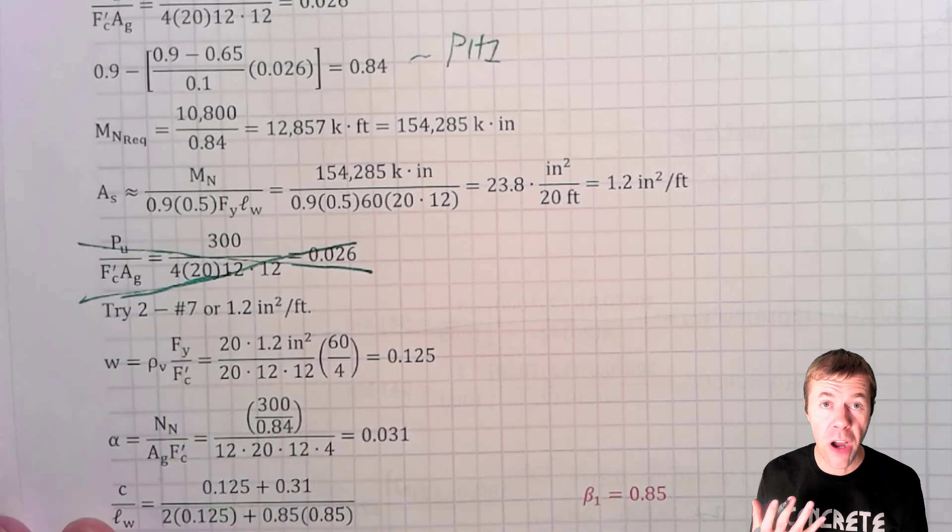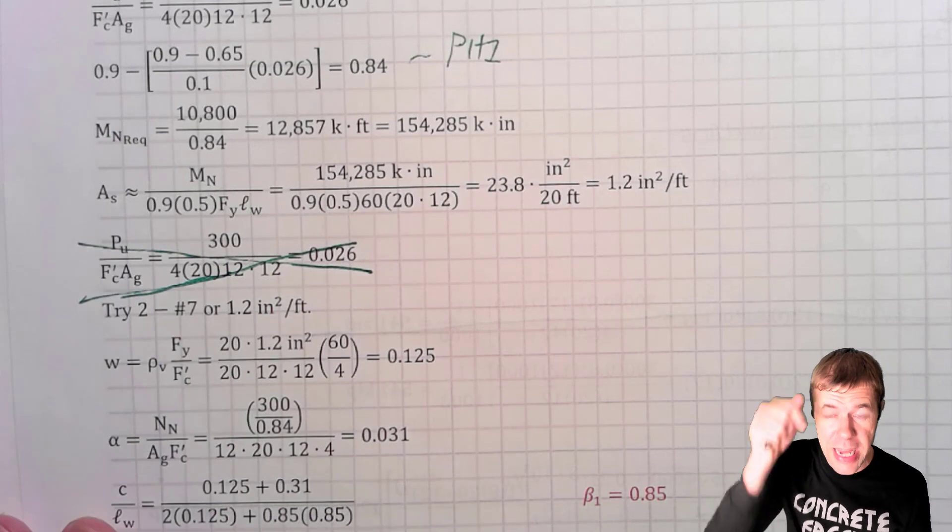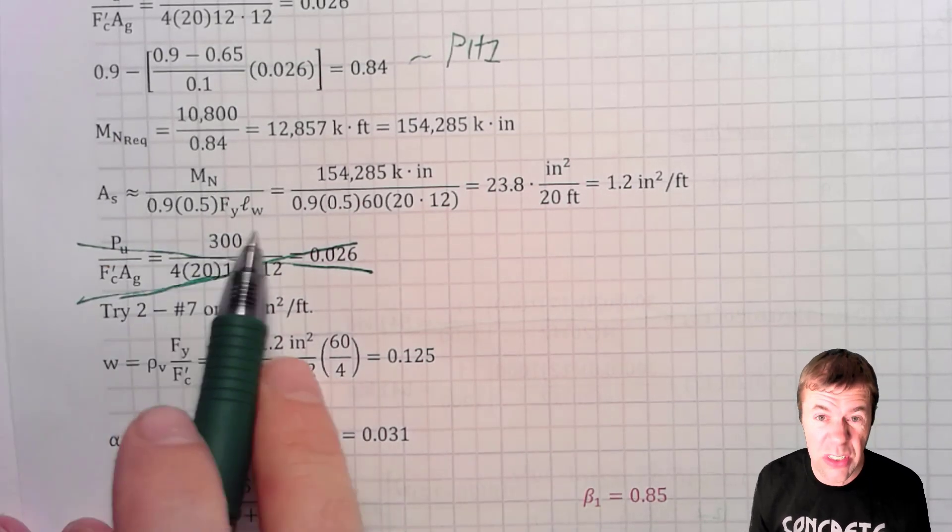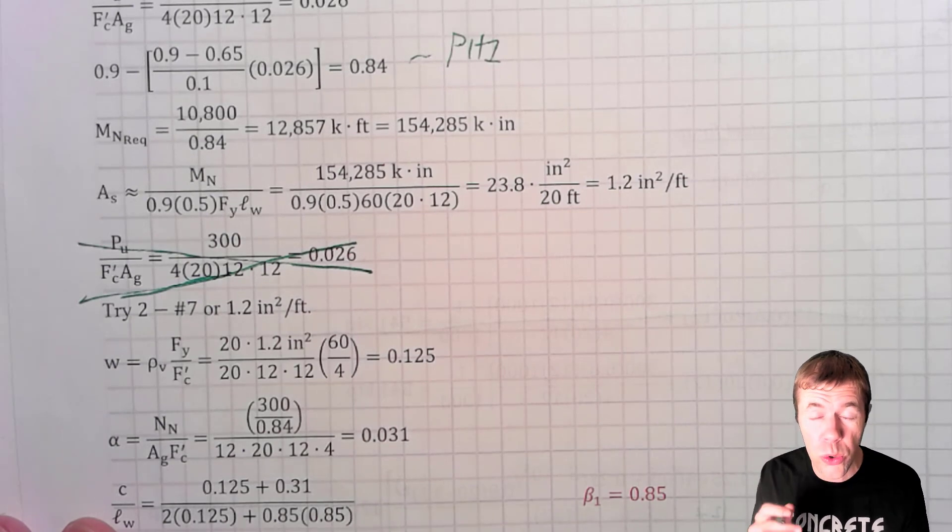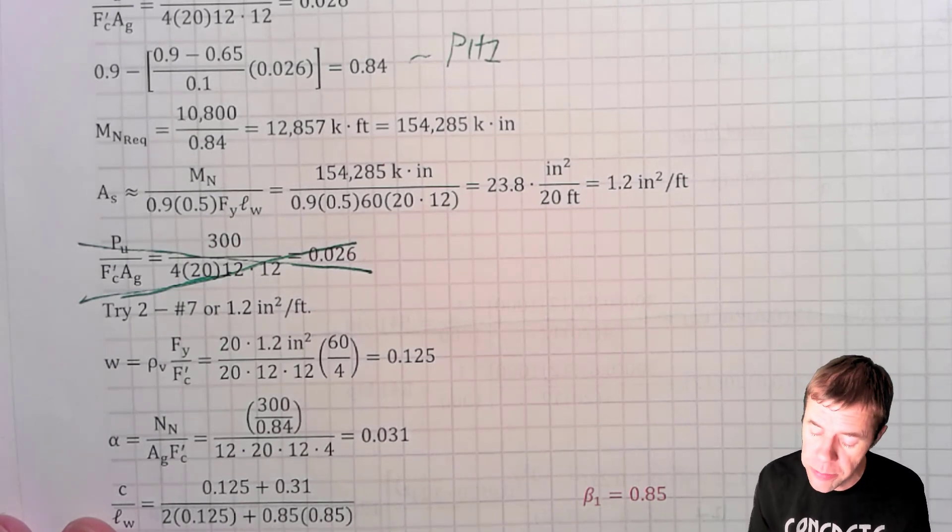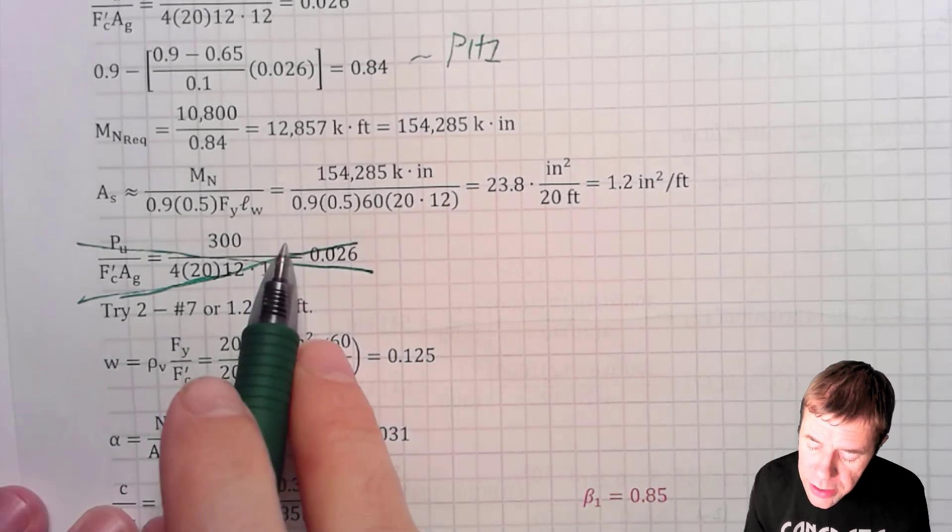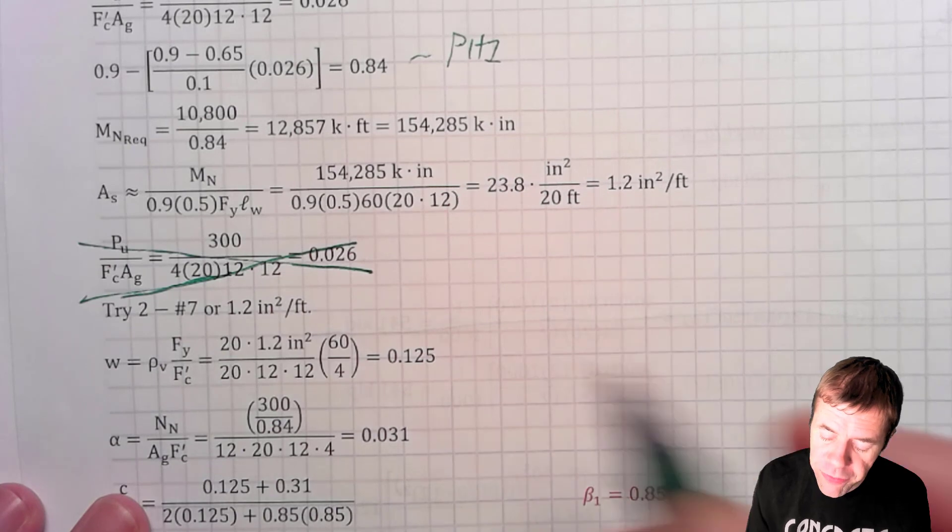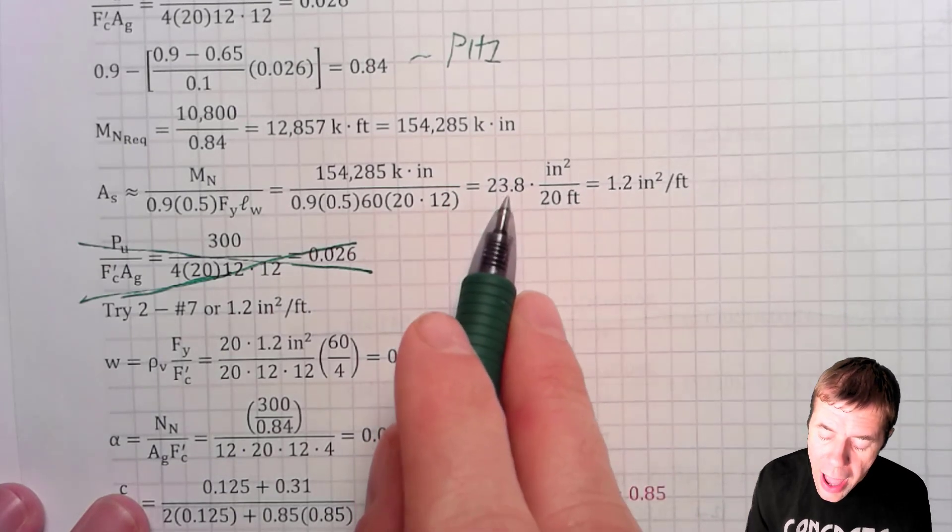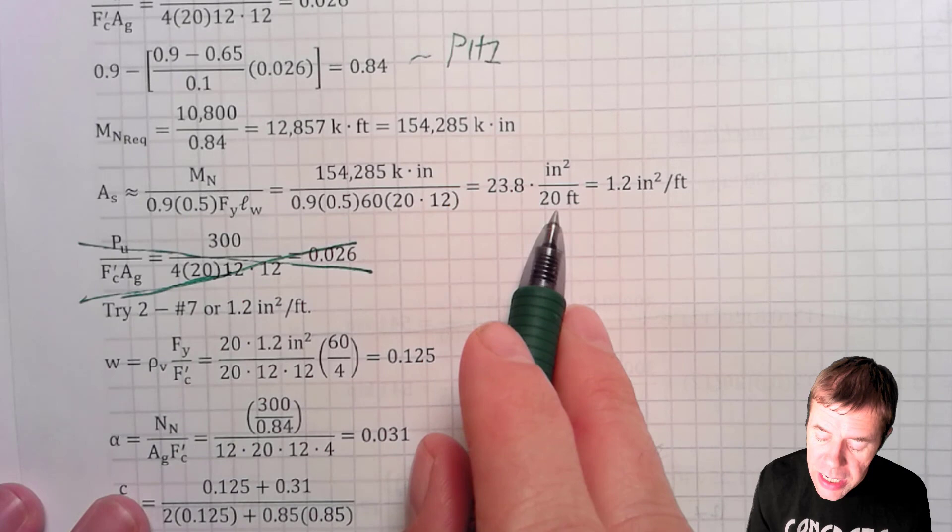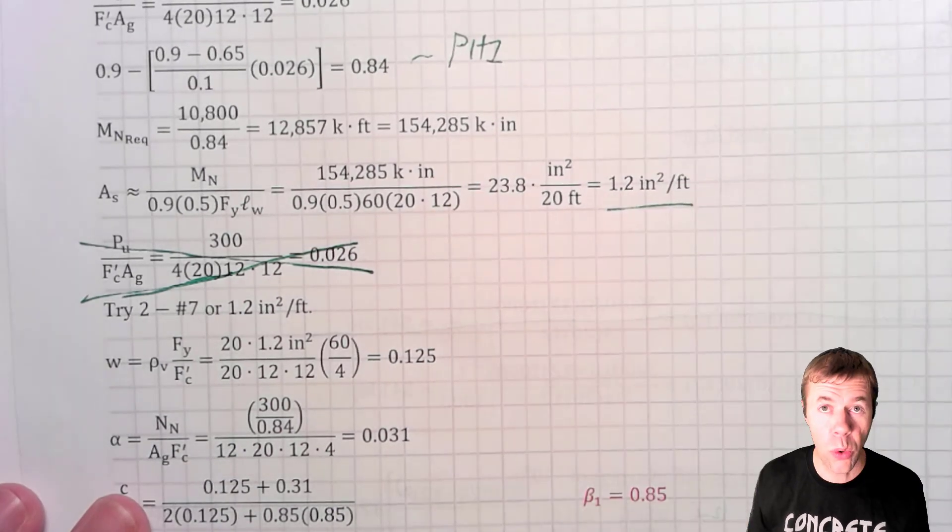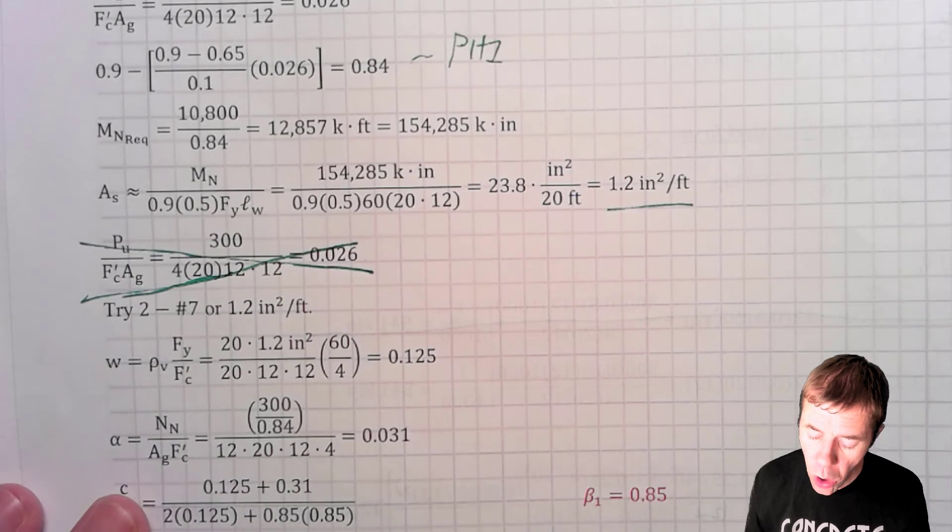Next, I'm going to find my longitudinal steel, the steel that goes up and down in my member. And I'm going to plug into this equation. This is a simplified for a much, much larger equation, assuming a bunch of stuff is equal to 0.9. We're going to check that assumption coming up. We're going to get this and then it's going to simplify once we put it in per foot. This is how many total inches squared we need. And we're going to divide by 20 feet.